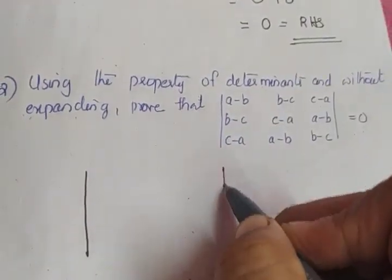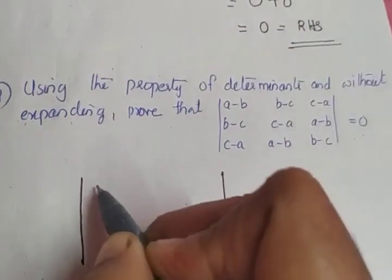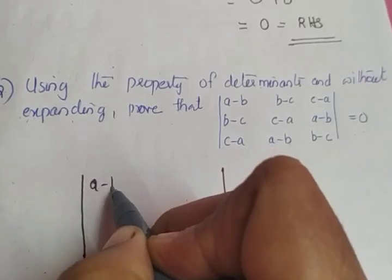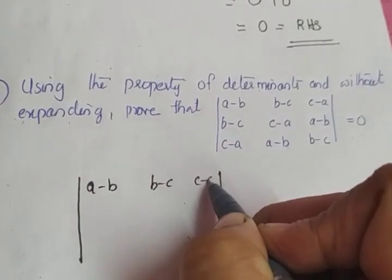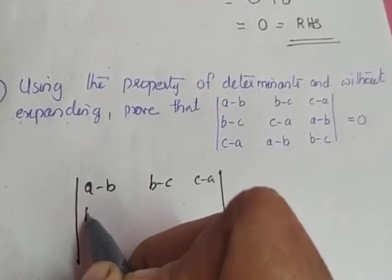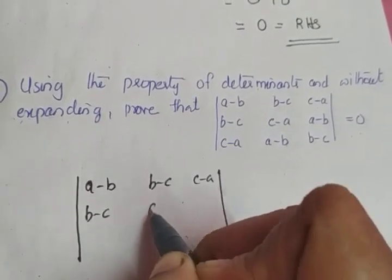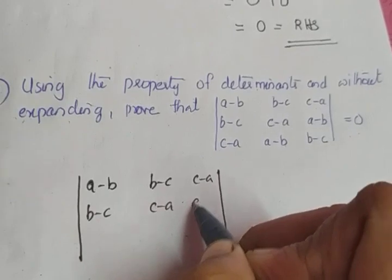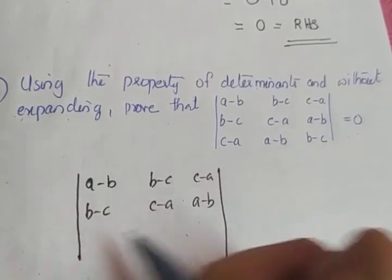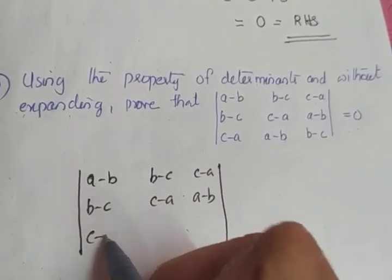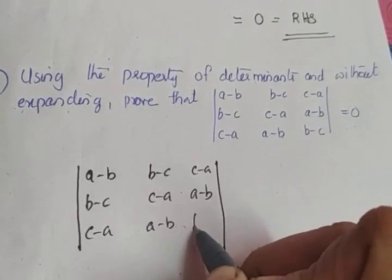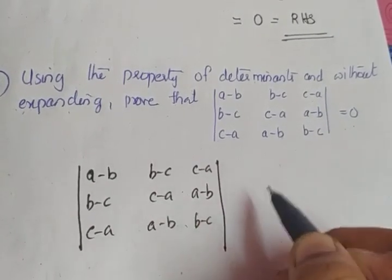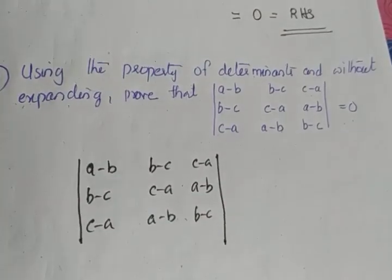Taking the left side, the determinant has elements: first row A minus B, B minus C, C minus A; second row B minus C, C minus A, A minus B; third row C minus A, A minus B, B minus C.